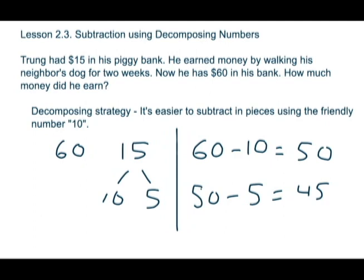Using the decomposing strategy, it's easier to subtract in pieces using the friendly number 10. So, we have represented our $60, which was his total, and the $15 that he started with.